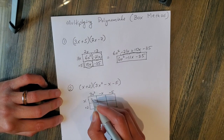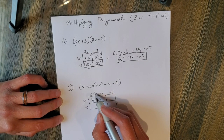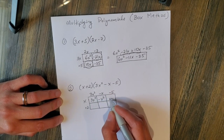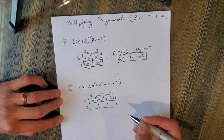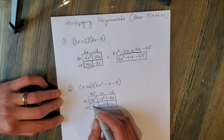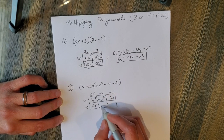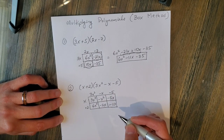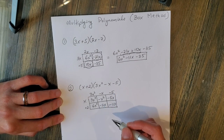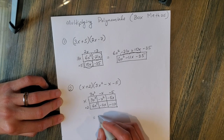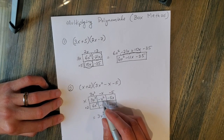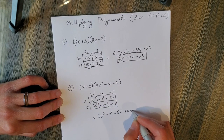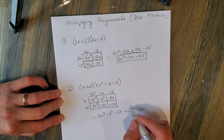Let's multiply and fill in all the boxes. 3x squared times x is 3x to the third power — I just added the exponents, 2 plus 1 is 3. x times negative x is negative x squared. x times negative 5 is negative 5x. 3x squared times 2 is 6x squared. 2 times negative x is negative 2x. And finally, 2 times negative 5 is negative 10.